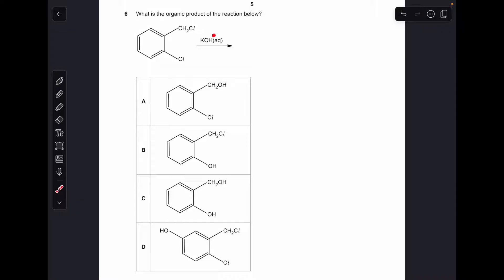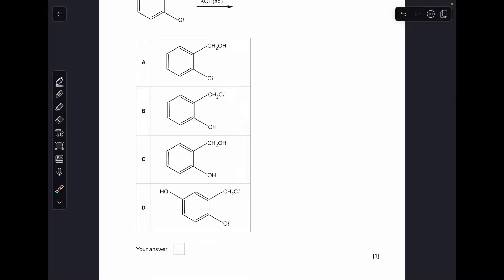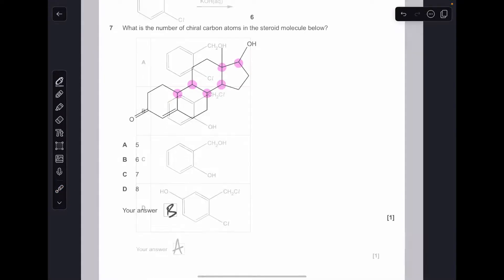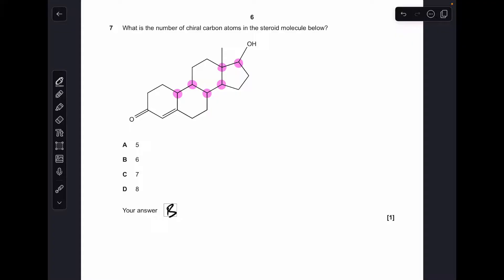Moving on to number six, aqueous hydroxide ions, which is what we've got in the KOH aqueous, will only react with this part here and that'll become an alcohol group. A is the right answer. Number seven, there's the chiral centres, so the answer was B.